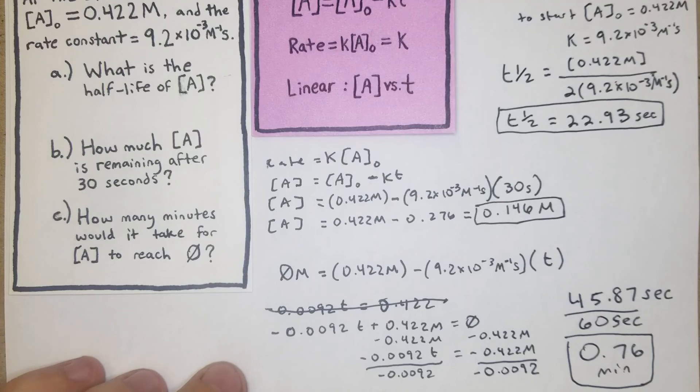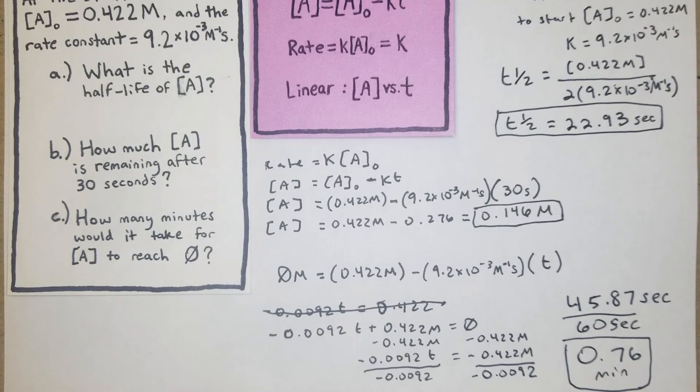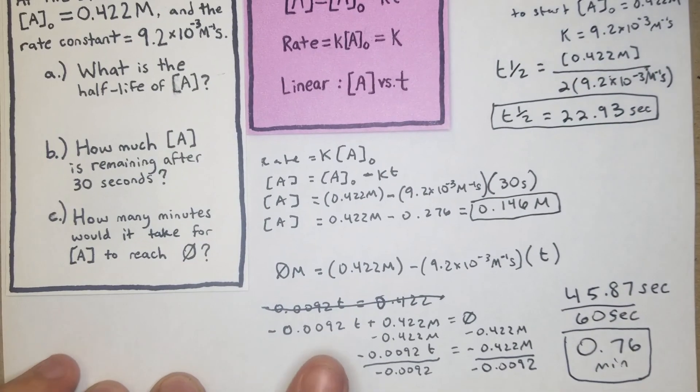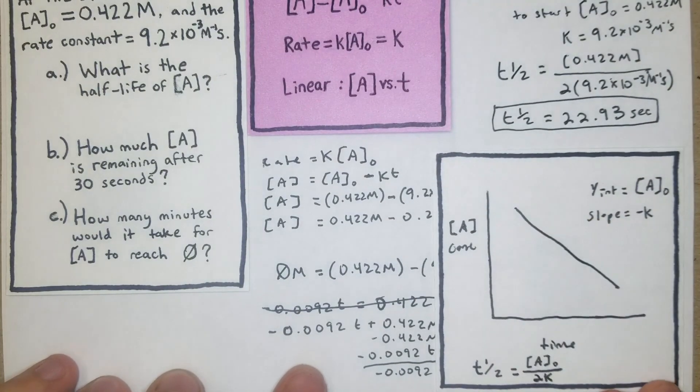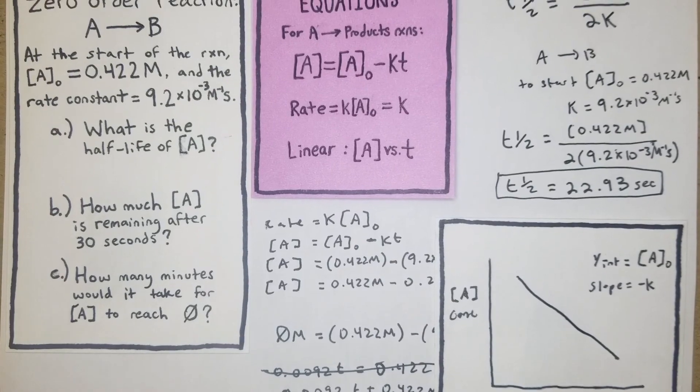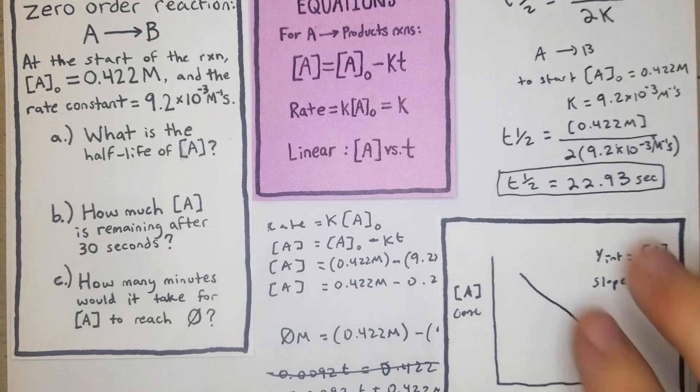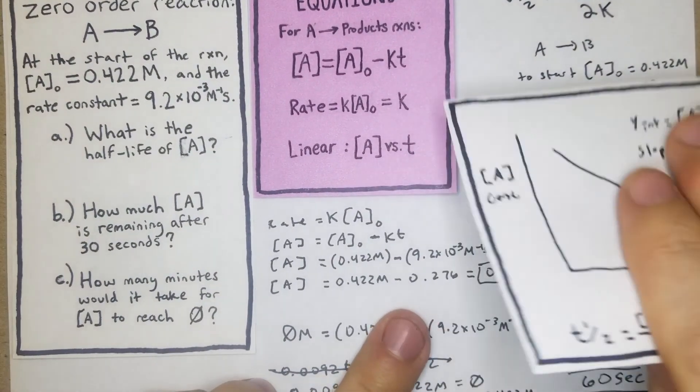And that's that for the zero order. I just wanted to do one of these multi-step problems and then we'll move on. In the next video we'll do first order and then so on and so forth. Just a quick reminder for the graphing of zero order